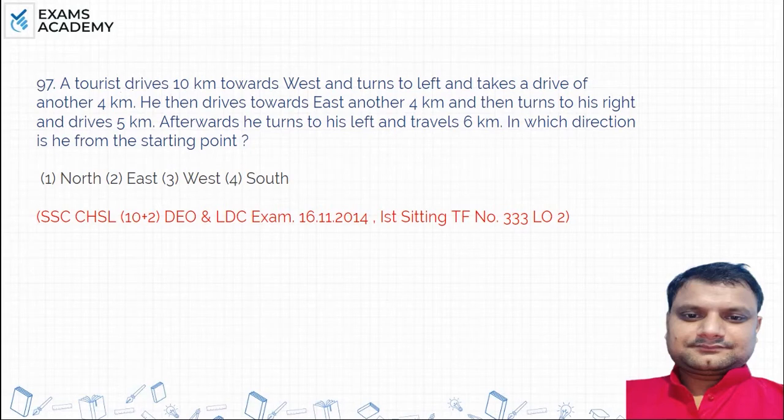Okay guys, question is coming. A tourist drives 10 km towards west and turns to left and takes a drive of another 4 km. It means that 10 km is going in the west direction. Suppose you start from this point and 10 km is going in the west direction.